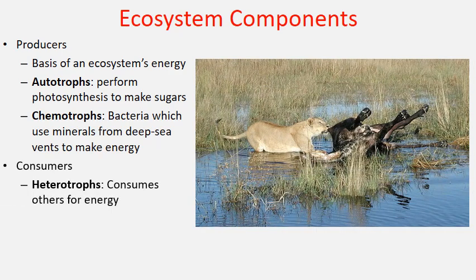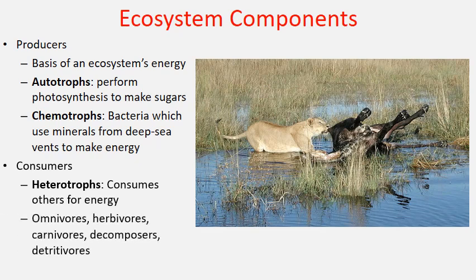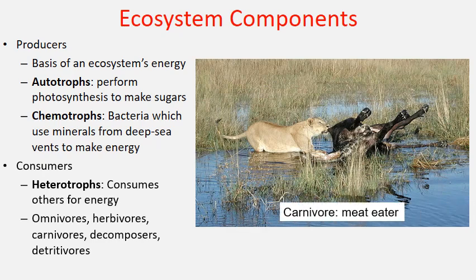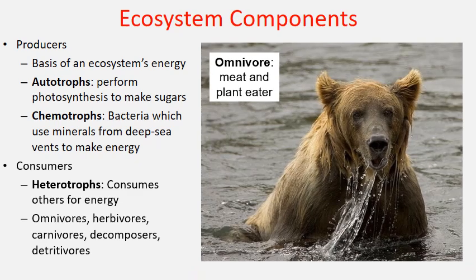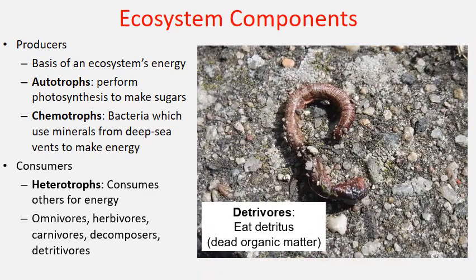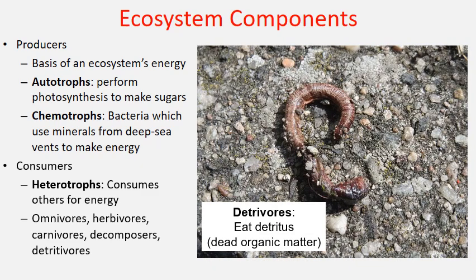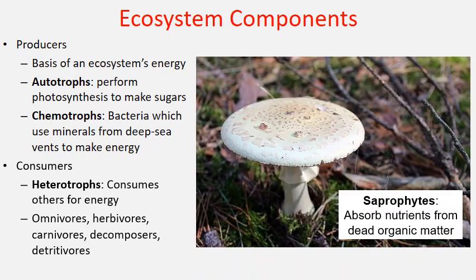Also in an ecosystem are the consumers — the heterotrophs — those that consume and eat others for energy. The lion represents a carnivore as it's a meat eater. Elk grazing on grasses are herbivores — plant eaters. Bears are a classic example of omnivores, which eat both plants and animals. Later we'll talk about detritivores, which eat organic matter, versus saprophytes, which absorb organic matter.